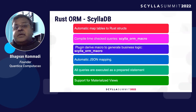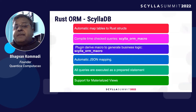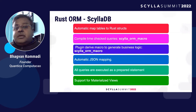There are code generators where, given the mapping between tables and Rust structs, you can generate the required code and use it for applying business logic and rules. You have macros and automatic JSON mapping, and all queries are executed as prepared statements — which is good because it ensures performance, similar to Java.